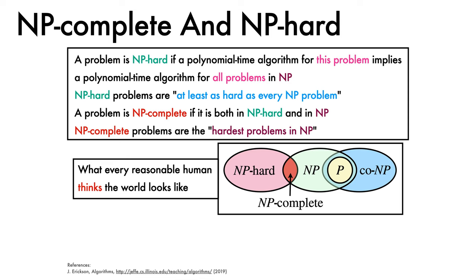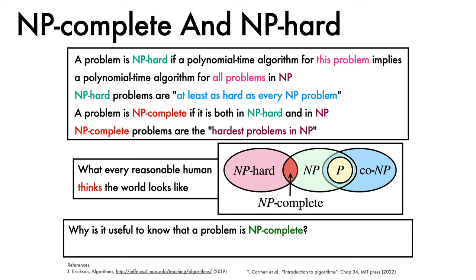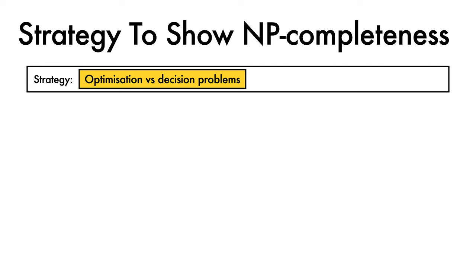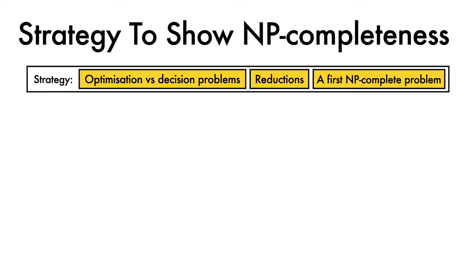We can expand our Venn diagram with a set of NP-hard problems. The overlap between NP-hard problems and NP problems is the set of NP-complete problems. As an algorithm designer, if you can show a problem is NP-complete, then there is truly no dishonour in giving up on searching for a fast exact solution, and you can instead focus on developing an approximation algorithm or some other line of attack. Our strategy for showing NP-completeness requires three key ideas: first, a way to convert optimisation problems to decision problems; second, reductions, which let us convert one problem into another; and finally, we need to find at least one problem which we know is NP-complete — a first NP-complete problem.